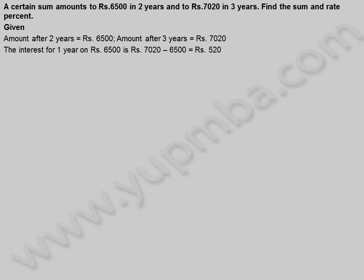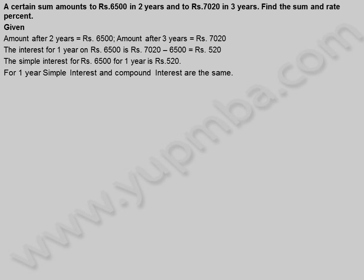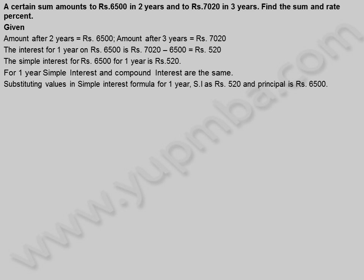The interest for one year on 6,500 rupees is 7,020 minus 6,500, which equals 520 rupees. The simple interest for 6,500 rupees for one year is 520 rupees. For one year, simple interest and compound interest are the same. Substituting values in the simple interest formula: simple interest is 520 rupees, principal is 6,500 rupees.